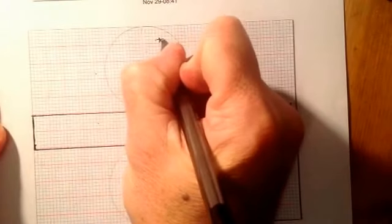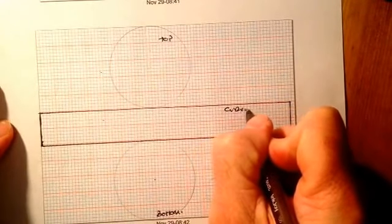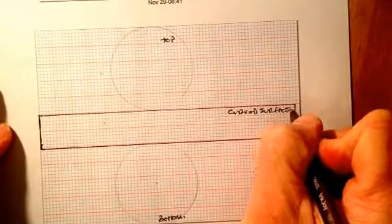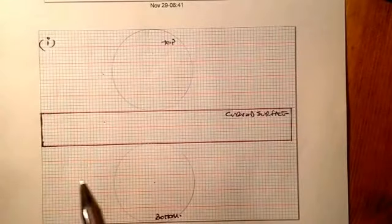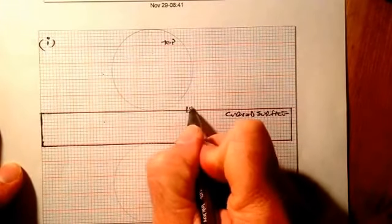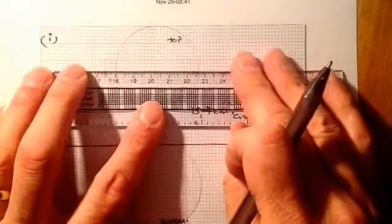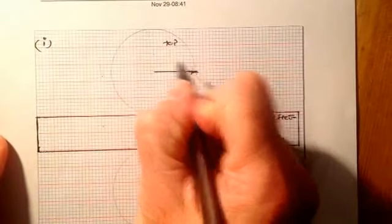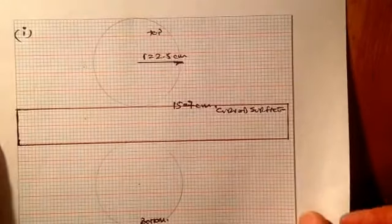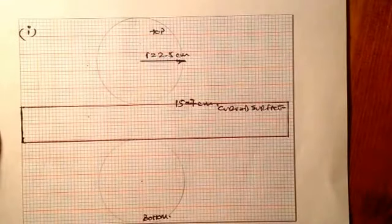What I have here is the top circle, the bottom circle, and this one here is the curved surface. Let's work out the area — I've done my first part. Remember, the length of this rectangle was 15.7 centimetres, the diameter was five, and the radius is 2.5. Let's go and do the surface area, which is going to be the area of these three parts added together.